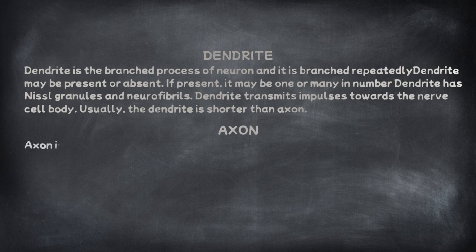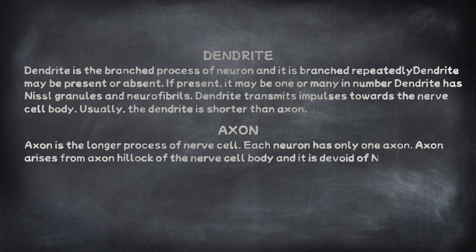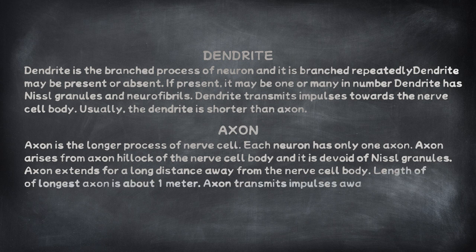The axon is the longer process of the nerve cell. Each neuron has only one axon. The axon arises from the axon hillock of the nerve cell body, and it is devoid of Nissl granules. The axon extends for a long distance away from the nerve cell body — the length of the longest axon is about 1 meter. The axon transmits impulses away from the nerve cell body.